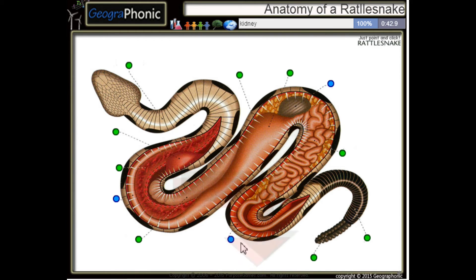This is the kidney of the snake. This is the esophagus. And this is the gallbladder.